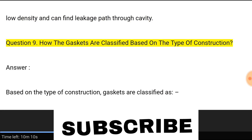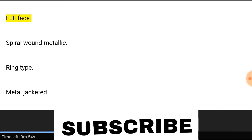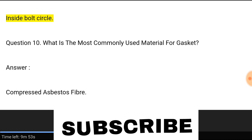Question 9: How are gaskets classified based on the type of construction? Answer: Based on the type of construction, gaskets are classified as: full face, spiral wound metallic, ring type, metal jacketed, and inside bolt circle.